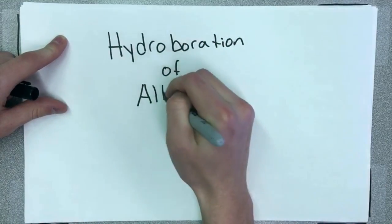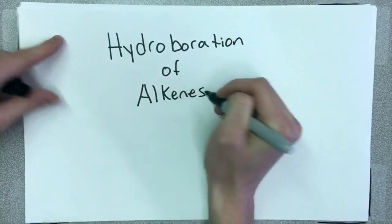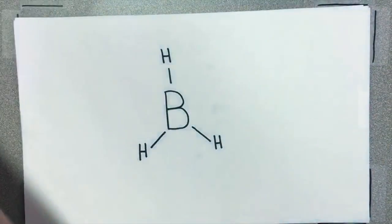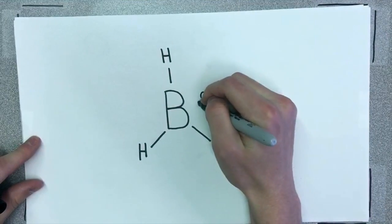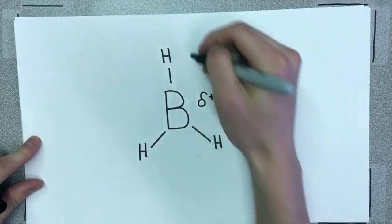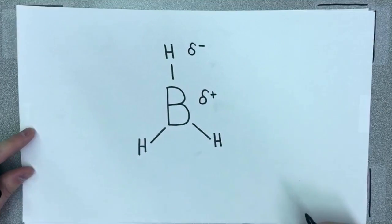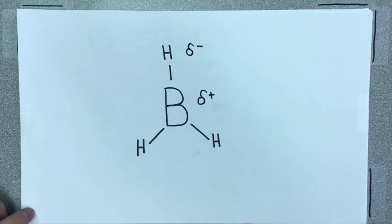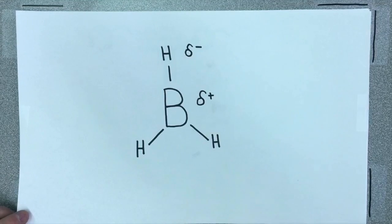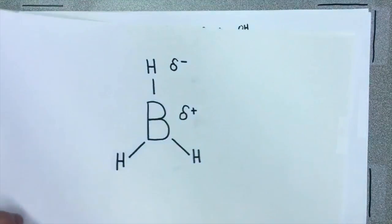To understand this reaction, let's first talk about our reagent, which is a borohydride. Now, borohydride is different than most in that it has a partially positive charge on the boron and a partially negative charge on hydrogen, which you don't see very often. But this is just a periodic trend. The hydrogens are more electronegative than the boron, so they're going to have more of the electrons most of the time. So that's why you end up with a reagent like this.